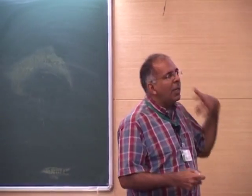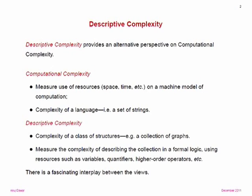In descriptive complexity we depart on two fronts. Instead of a machine model and resources like space and time, we have a logical model where our resources are things like quantifiers, variables, and higher-order operators. And instead of talking about strings, we talk directly about classes of structures. When we talk about the complexity of deciding whether a graph is Hamiltonian, we really mean the input is a graph, not a string encoding a graph.